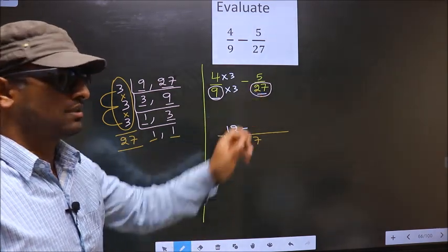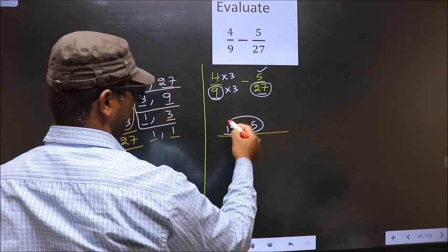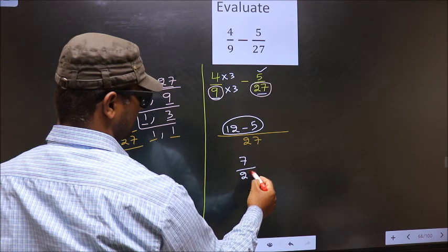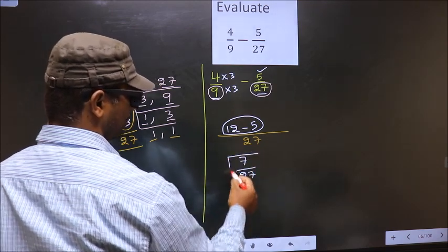Now 9 should change to 27. For that to happen, we should multiply by 3. Whatever number we are multiplying in the denominator, in the numerator also we should multiply by the same number. So 4 into 3 is 12.